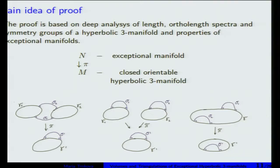If we know the length spectrum and ortho-length spectrum, then we can do this classification. For example, if we have a two-fold cover, then every ortho-curve downstairs should have exactly two pre-images. We then analyze this ortho-spectrum to see if it's possible to take a quotient. In some cases we saw just one unique ortho-curve of some length, which means it cannot have a non-trivial quotient. That was the main idea.